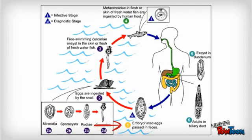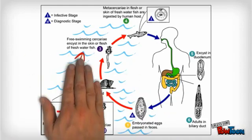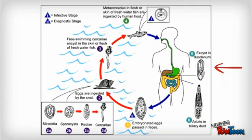Life cycle: Embryonated eggs pass in feces, and are then ingested by snails. Free-swimming cercaria encyst in the skin or flesh of freshwater fish. The metacercaria in the flesh or skin of the freshwater fish are then ingested by humans. The cercaria, a free-swimming form of the parasite, enable the second intermediate host to be infected. They encyst in the duodenum and mature into adults, which then migrate to the bile duct.